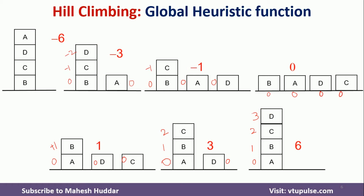So this is how we can use either a local or global heuristic function to go from the initial state to the goal state using the Hill Climbing algorithm. I hope this concept is clear. If you like the video, do like and share with your friends. Press the subscribe button for more videos and the bell icon for regular updates. Thank you for watching.